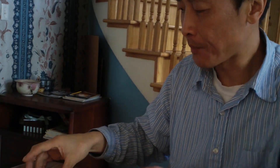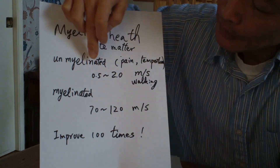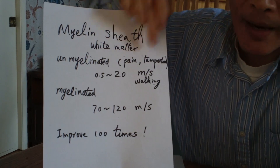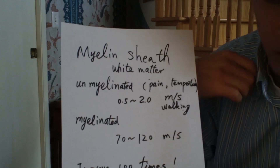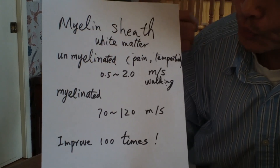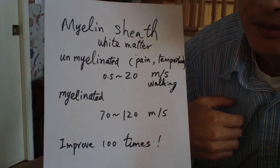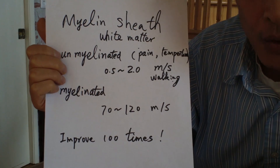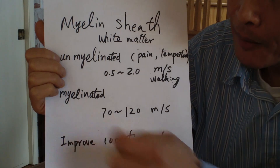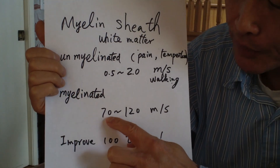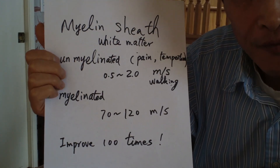This is an example of myelinated versus non-myelinated neurons. For pain or temperature signals, they travel very slowly — between 0.5 to 2 meters per second, like walking or jogging speed. But the kind of neuron responsible for touch transmits signals through myelinated fibers at 70 to 120 meters per second — about a hundred times faster.